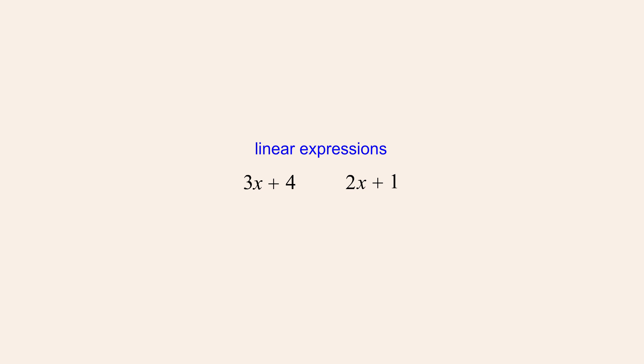We can expand the product of the two binomials using the distributed property. To do this, we must multiply each term in the first binomial times each term in the second binomial and add the resulting products.